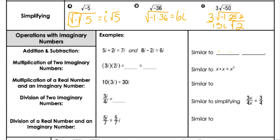Let's look at some operations — some examples of what this looks like with imaginaries, and see what it's similar to that we already know. When we're adding and subtracting, it's essentially combining like terms. So if I have an imaginary plus an imaginary, or an imaginary minus imaginary, I just subtract the numbers and keep it imaginary.